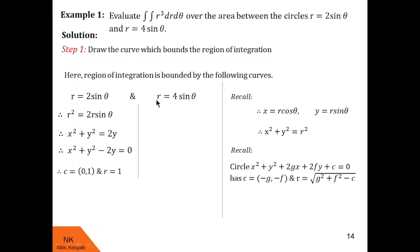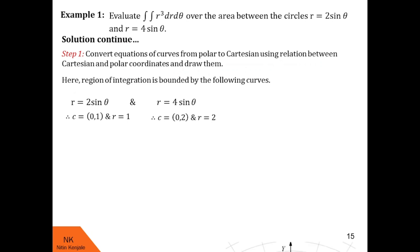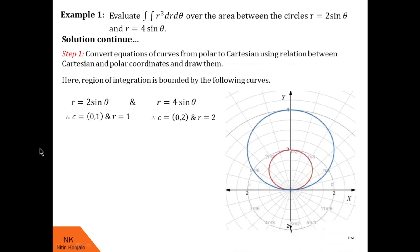Similarly, multiplying r = 4 sinθ throughout by r gives r² = 4r sinθ, which in Cartesian coordinates is x² + y² = 4y. Comparing with the standard circle equation gives center (0, 2) and radius 2. We can now draw both circles: the red curve is r = 2 sinθ and the blue curve is r = 4 sinθ. Together these two circles bound the yellow region.